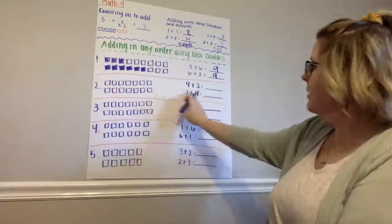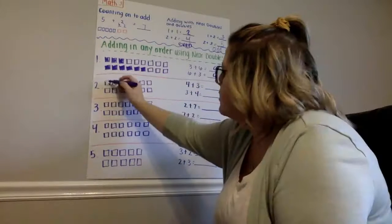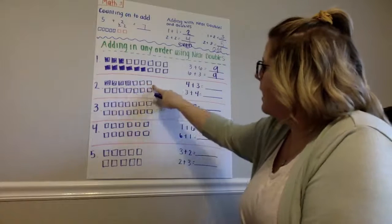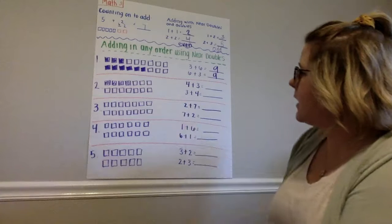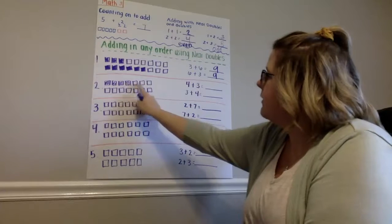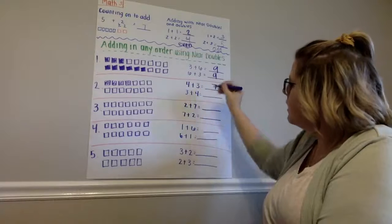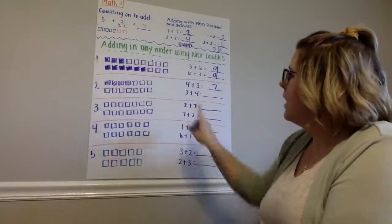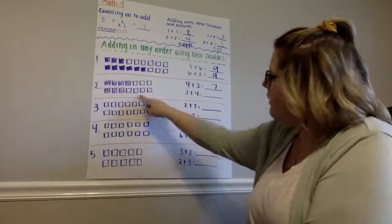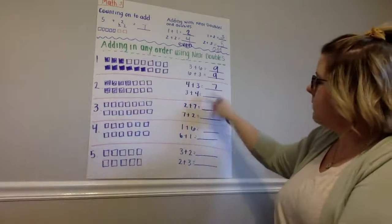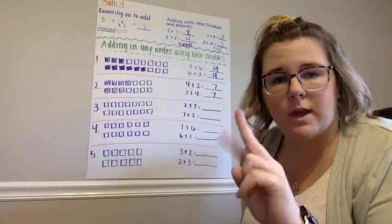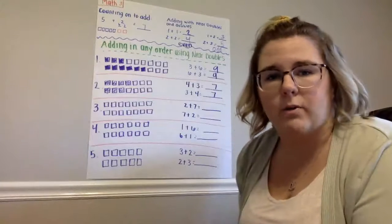So, on number 2, we have 4 plus 3. So, I'm going to color in 4 cubes. And I have 3 that are not colored in. 4 plus 3 equals 1, 2, 3, 4, 5, 6, 7. On this one, I'm just going to color in 3 cubes. And I have 4 right here. 3 plus 4 equals 7. It's the same thing. Just flip-flopped. You can add it in any order.